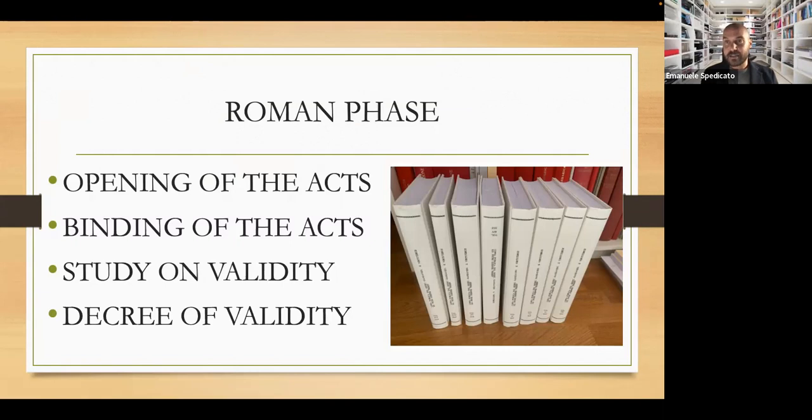After the opening of the acts, there is the binding of the acts. So whatever you have seen in those boxes are now into white, big volumes of the cause. We have 151 volumes. These volumes were afterwards studied on the validity of the cause. So the dicastery is very precise, is very strict, and they want to be sure that every canonical step has been done during the diocesan phase. So this is the study of the validity. And finally, the dicastery issued the decree of validity, and this happened this week. So it's very recent. So it's another point to thank God that we have reached this point. So the diocesan phase has been approved in its juridical issues, in its juridical aspects. So praise the Lord.